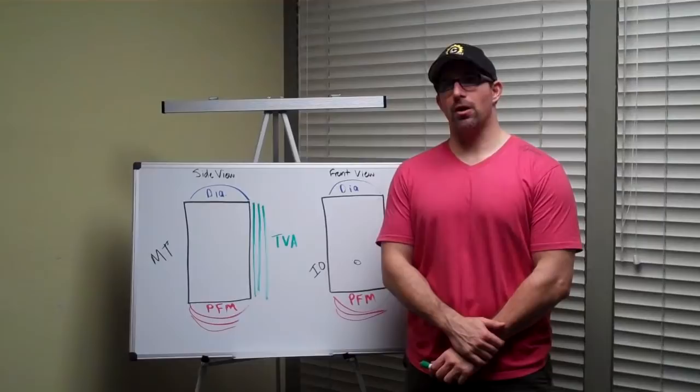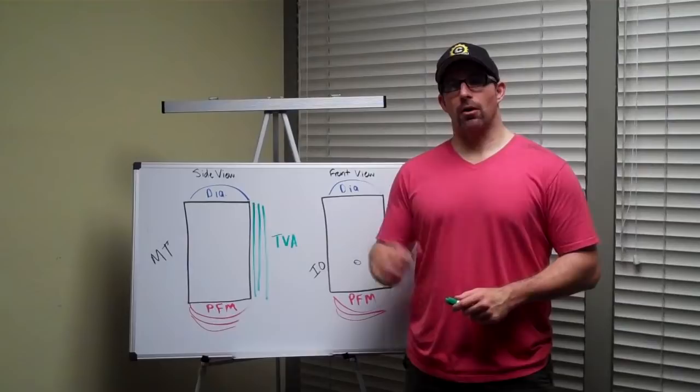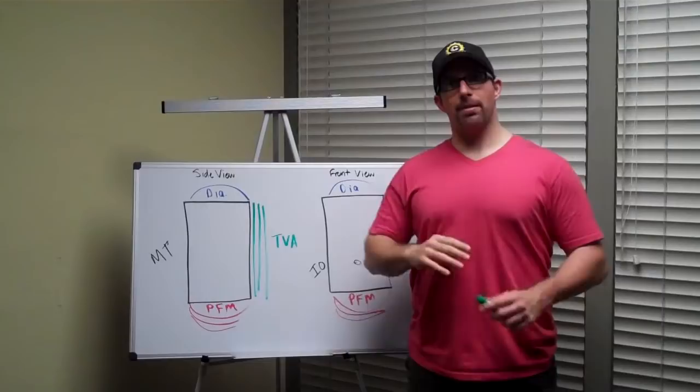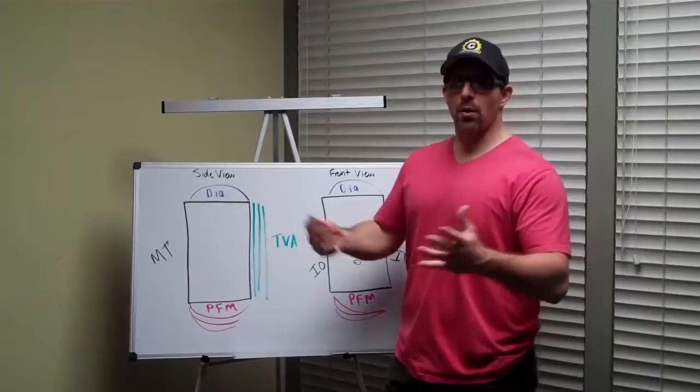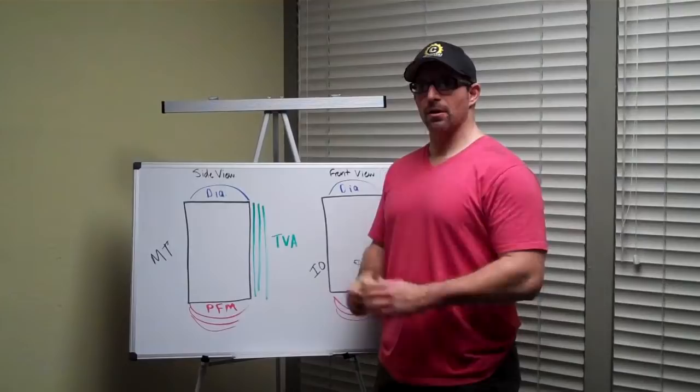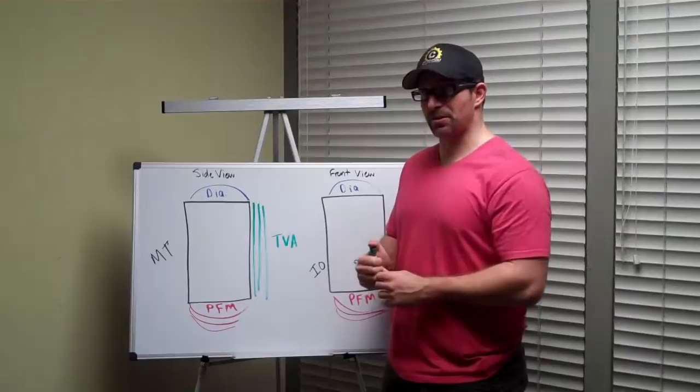If you remember from class and the handout, there are five muscles that make up your core. The muscle on the top of this canister that we're talking about... Before we go into the five muscles, think of the core as this canister, this rectangular three-dimensional canister where every side is being represented here.